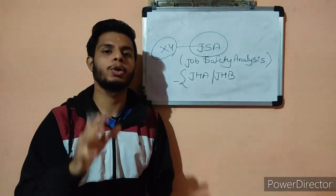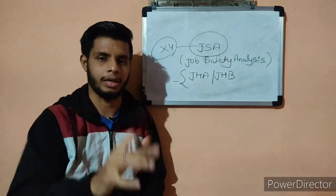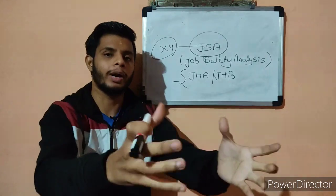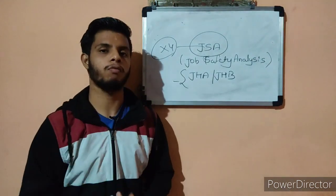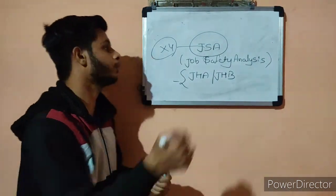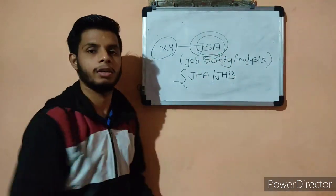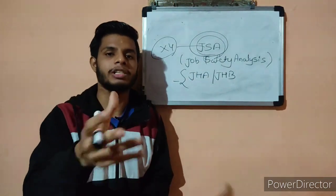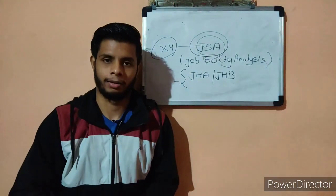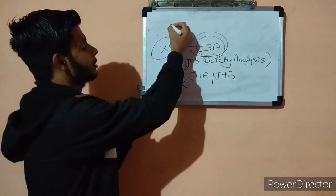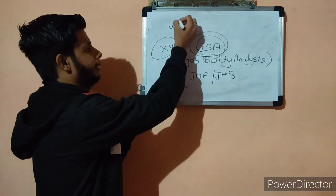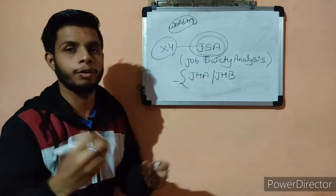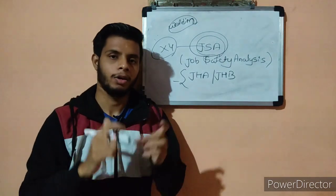The first step is that you need to identify your task. Every job will be there, and you need to identify one specific job for which you need to carry out a job safety analysis. For example, you have identified the job of welding. Welding is one job — let's take welding as our example. You need to carry out one JSA for that welding activity.